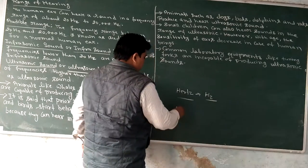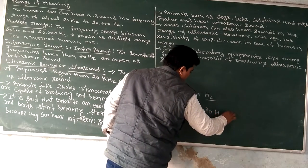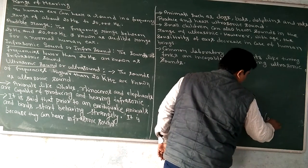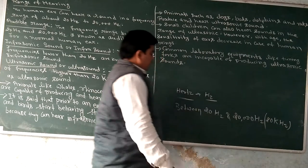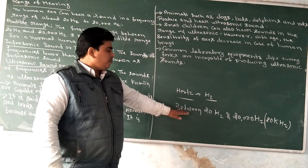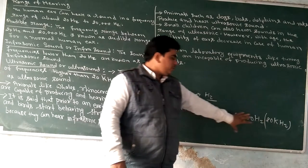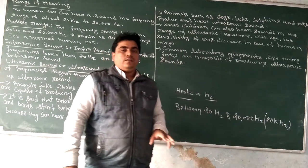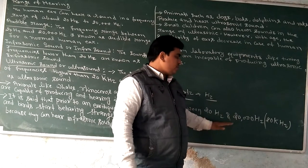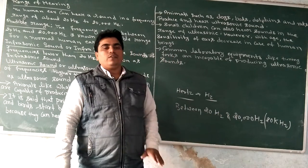The range of frequencies of audible sounds is between 20 hertz and 20,000 hertz, or 20 kilohertz. The sound in this range is known as audible sound.